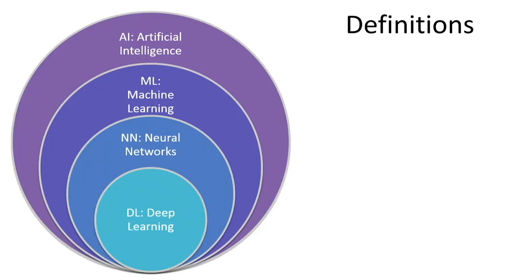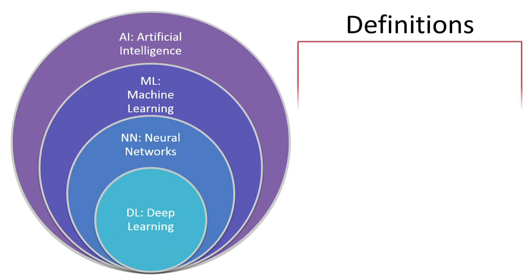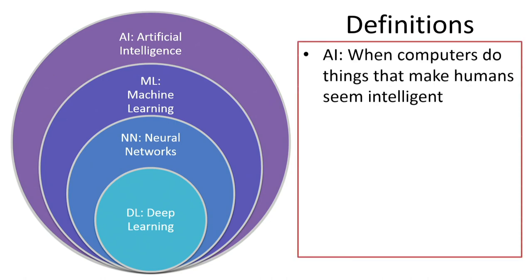I want to start with some definitions, because not everyone is familiar with all of these terms. Artificial intelligence — if you look it up in the dictionary you get something like 'when computers do things that make humans seem intelligent.' The problem with that definition is, number one, it's changing. Back in the 80s when I trained in AI, it was about planning driving routes or playing chess, whereas today we think about self-driving cars and interpreting chest radiographs. The other problem is that there's a lot of anthropomorphic layering that the media adds — a meaning that's not really there when we talk about artificial intelligence.